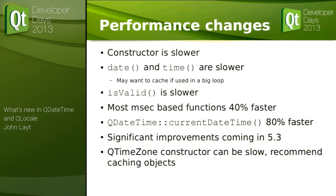There are performance implications. The constructor is slower — I haven't put a percentage because it looks horrible — but it comes from such an incredibly low base that for most purposes it's insignificant. Accessing date and time is slowest, so if you're in a million-iteration loop you might want to cache it. isValid() is slower because it has to do more work. Everything else however is at least 40% faster, currentDateTime() is 80% faster, and more performance improvements are coming in 5.3.